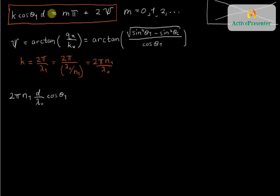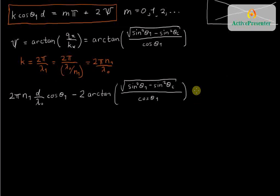And now I'm going to have negative 2ψ. Ψ is given by this expression here. So minus 2 arc tangent, and then this expression. And all of that equals m π.